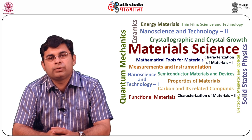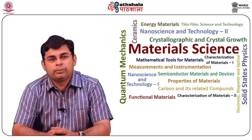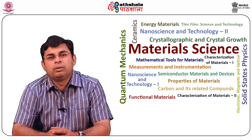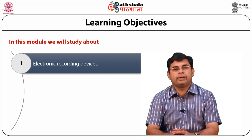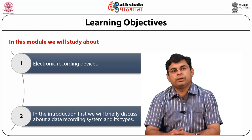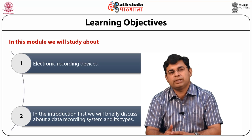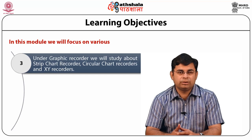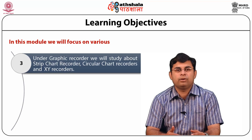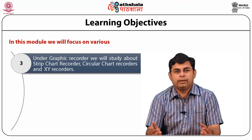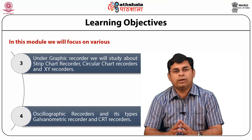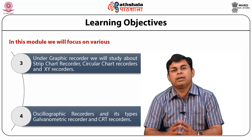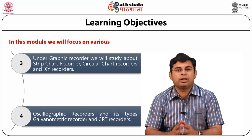Today we are going to discuss the module on recorders and recording systems, part 1. In this module we study about electronic recording devices. In the introduction, we will briefly discuss data recording systems and their types. Under graphic recorders we will study strip chart recorders, circular chart recorders, and XY recorders. In the end we will study oscillographic recorders and its types — galvanometric recorders and CRT recorders.